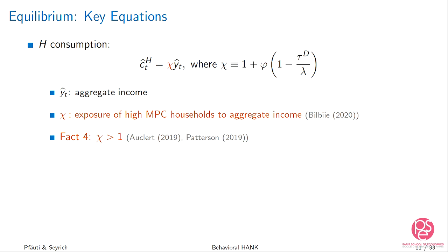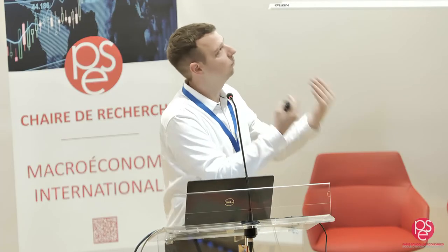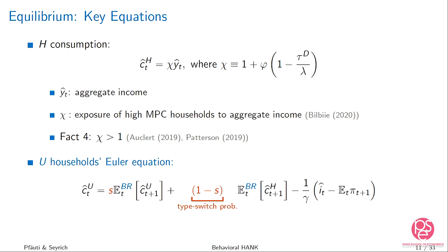In terms of underlying parameters, hand-to-mouth households benefit a lot from wage increases but are not very exposed to profit income. Consider an expansionary monetary policy shock: demand from unconstrained households rises, labor demand and wages go up, but because of sticky prices, profits fall. Hand-to-mouth households fully benefit from the wage increase but don't suffer from the profit decrease, so their income moves more than one-for-one with aggregate income, captured by chi larger than one.